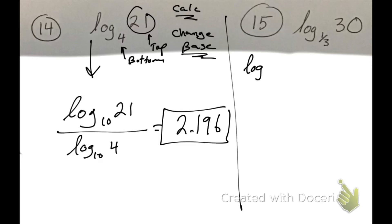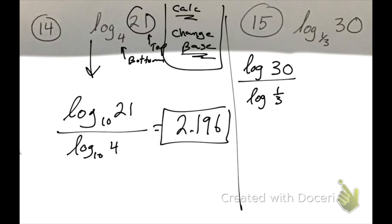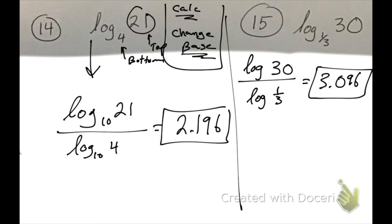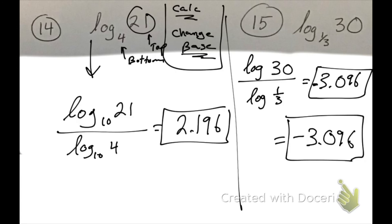Question 15: I'm going to change the base and write log of 30 divided by log of 1/3. When I enter that into my calculator, it gives me — let me double check — log 30 divided by log of 1/3. I forgot the negative: it should be negative 3.096. Always double-check yourself — don't forget the negative.